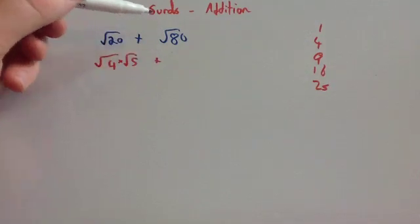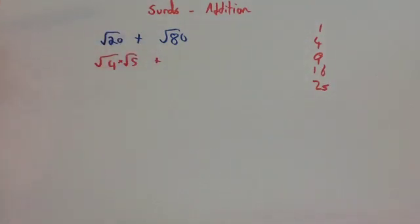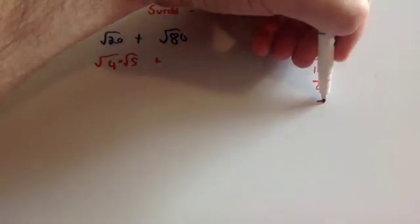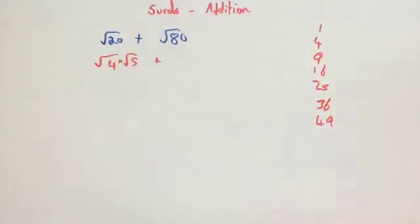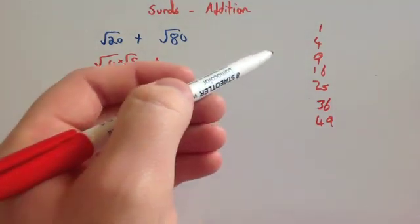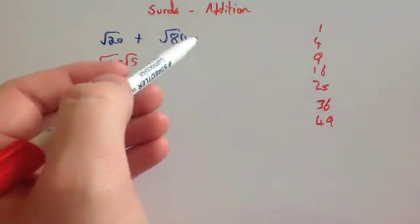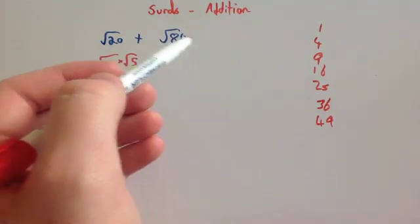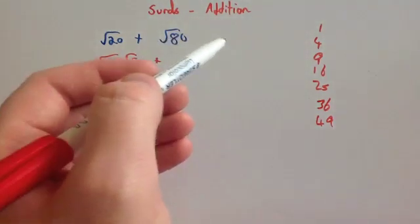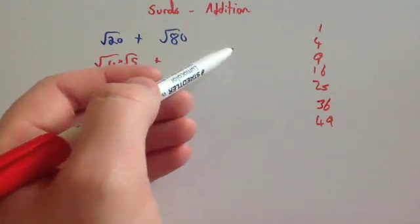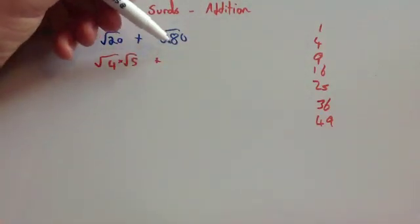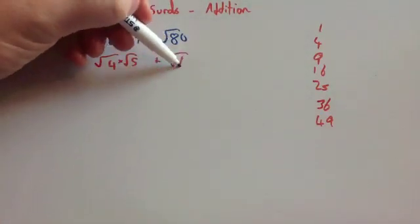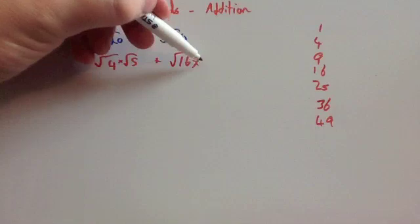Now for root 80: the largest square number that goes into 80 — continuing our list: 36, 49 — is going to be 16, because 16 times 5 is 80. So root 16 times root 5 would be root 80, meaning root 80 is root 16 times root 5.